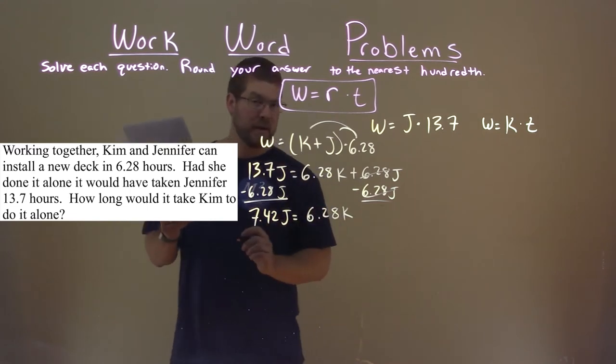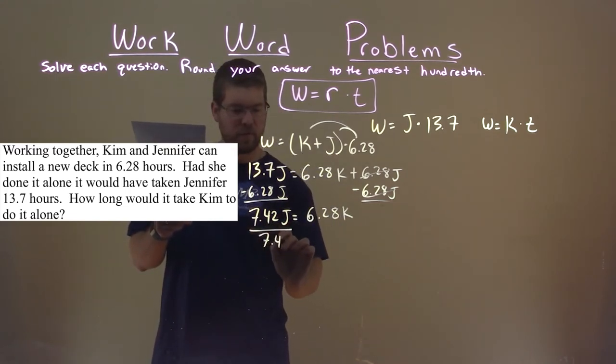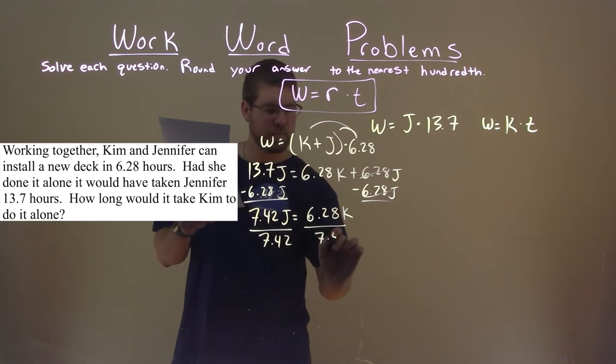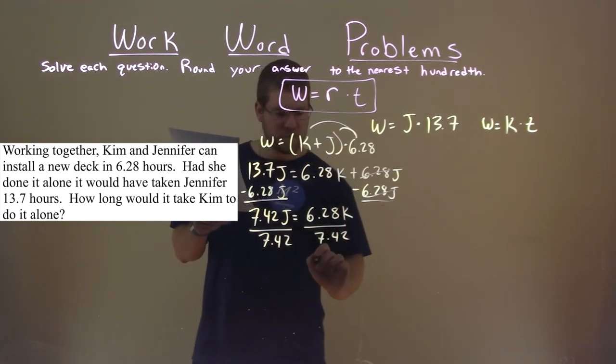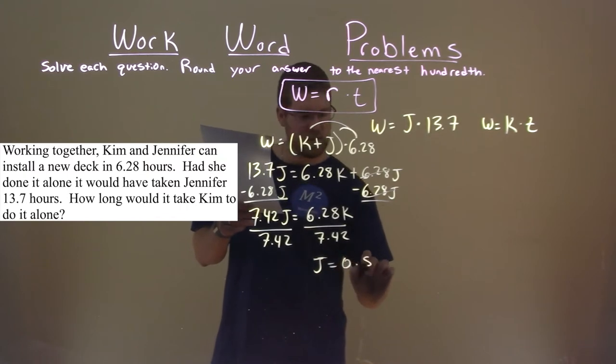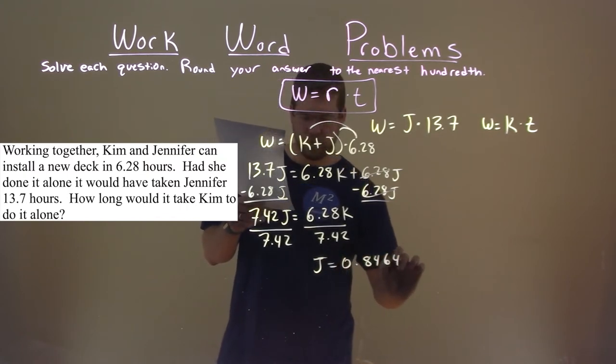And now I'm going to get J by itself. So divide both sides by 7.42, and we have J is equal to 0.8464 K.